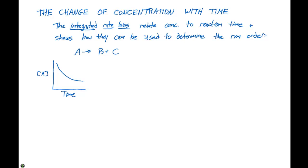If we assume a first order reaction, we can write the rate as a rate law. We talked about writing these as change in concentration over change in time. So the change in concentration of A with respect to time equals K, the rate constant, times the concentration of A to the first power. On the right-hand side we write the rate law; on the left-hand side, the rate of change for this reaction.